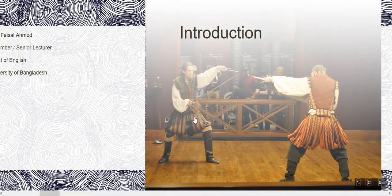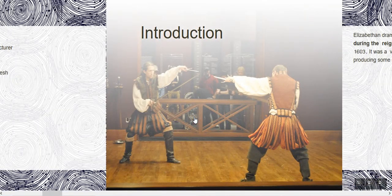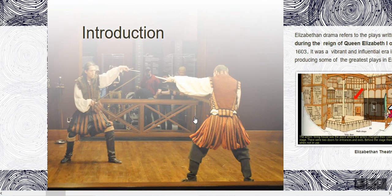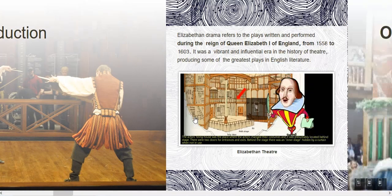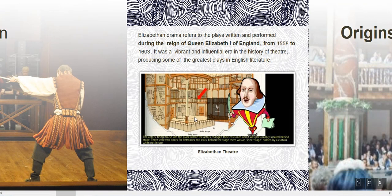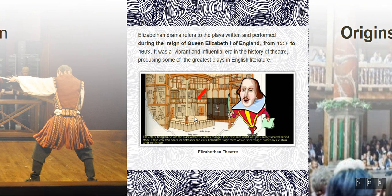Introduction to Elizabethan Drama. Elizabethan drama refers to the plays written and performed during the reign of Queen Elizabeth the First of England, from 1558 to 1603. It was a vibrant and influential era in the history of theatre, producing some of the greatest plays in English literature.